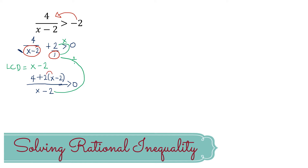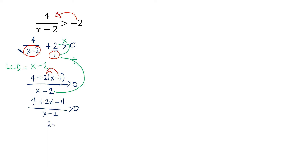Now let us simplify. Distributing 2 to x and to negative 2, we rewrite as: 4 plus 2x minus 4 all over x minus 2, greater than 0. Combining like terms in the numerator, 4 and negative 4 cancel to 0, leaving 2x over x minus 2 is greater than 0. We have now satisfied the condition that the expression is in the form P(x) over Q(x), where P(x) is 2x and Q(x) is x minus 2.